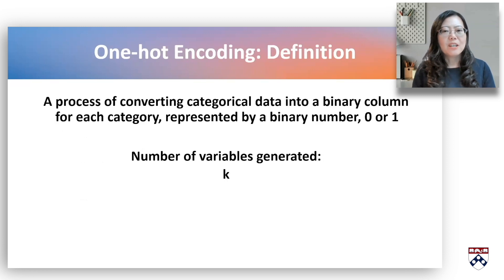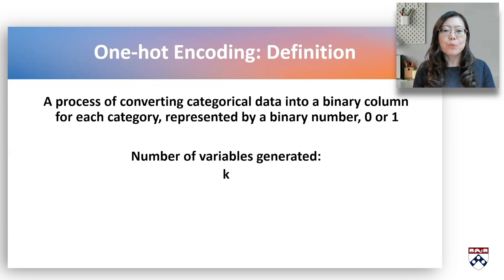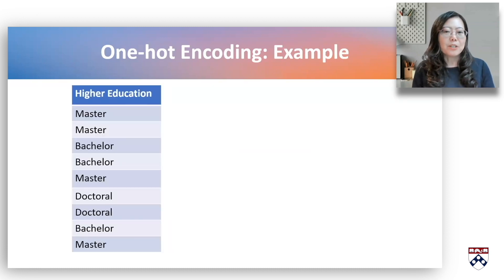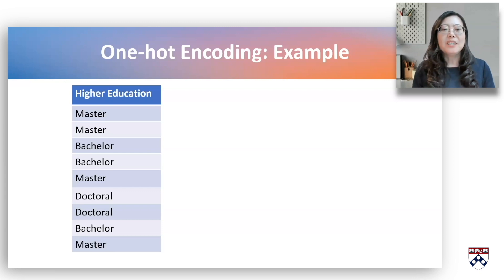One-hot encoding is the most common encoding method. It's a process of converting categorical data into a binary column for each category, represented by a unique binary number, 0 or 1. The number of variables generated is the same as the number of categories, that is k. This type of encoding is used when the data is nominal. Here, I use an ordinal variable — the highest educational level — as an example. Later, you will see why one-hot encoding is not appropriate for the ordinal variable.